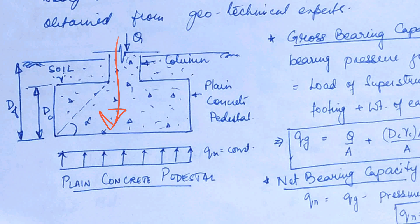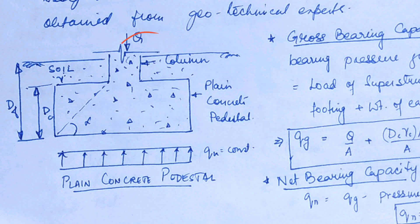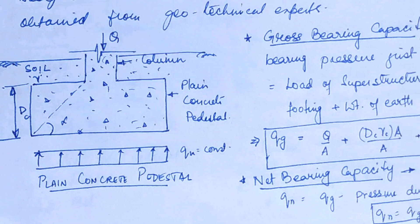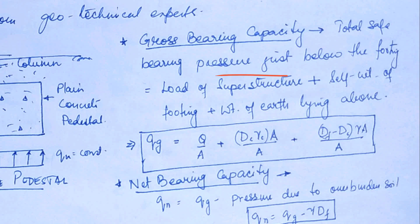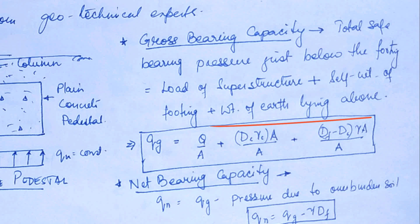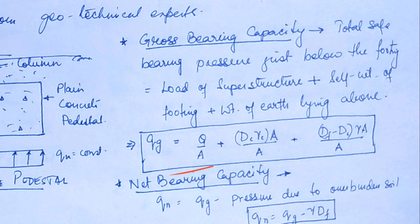So what are the forces coming on your soil mass? First, the load of the superstructure Q; then the load of the footing itself; and the load of the soil which is actually retained here. So the total gross bearing capacity is the load of the superstructure plus self-weight of footing plus weight of earth lying above — giving us gross bearing capacity QG.